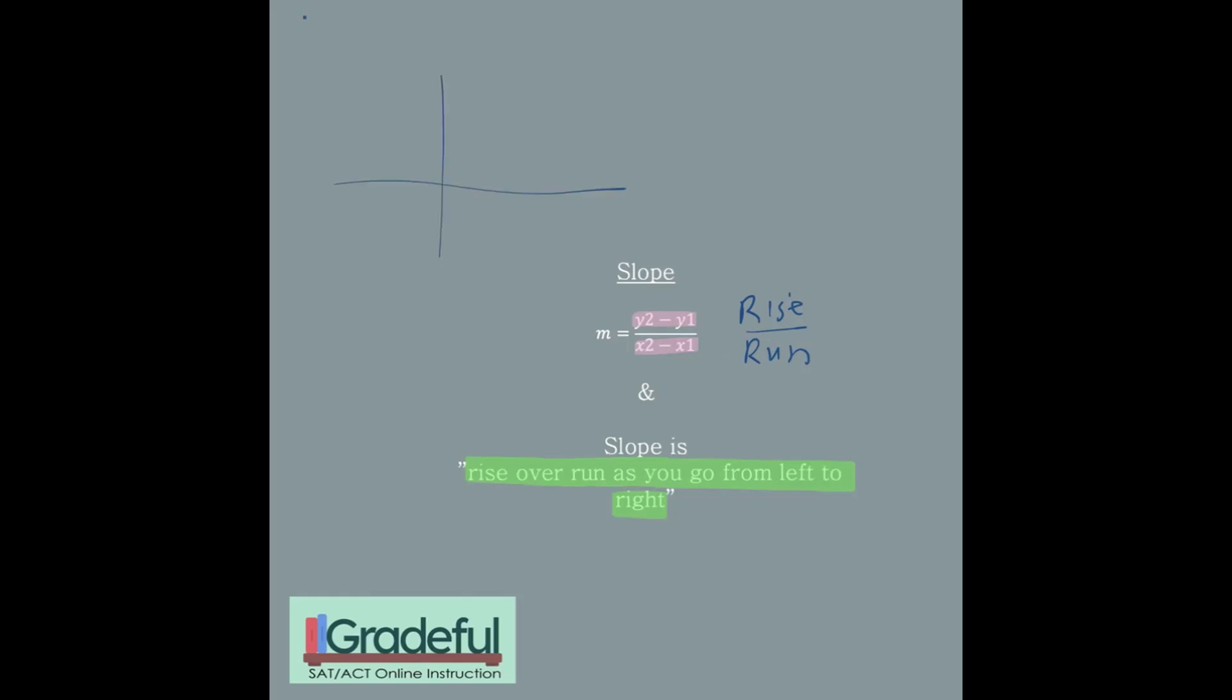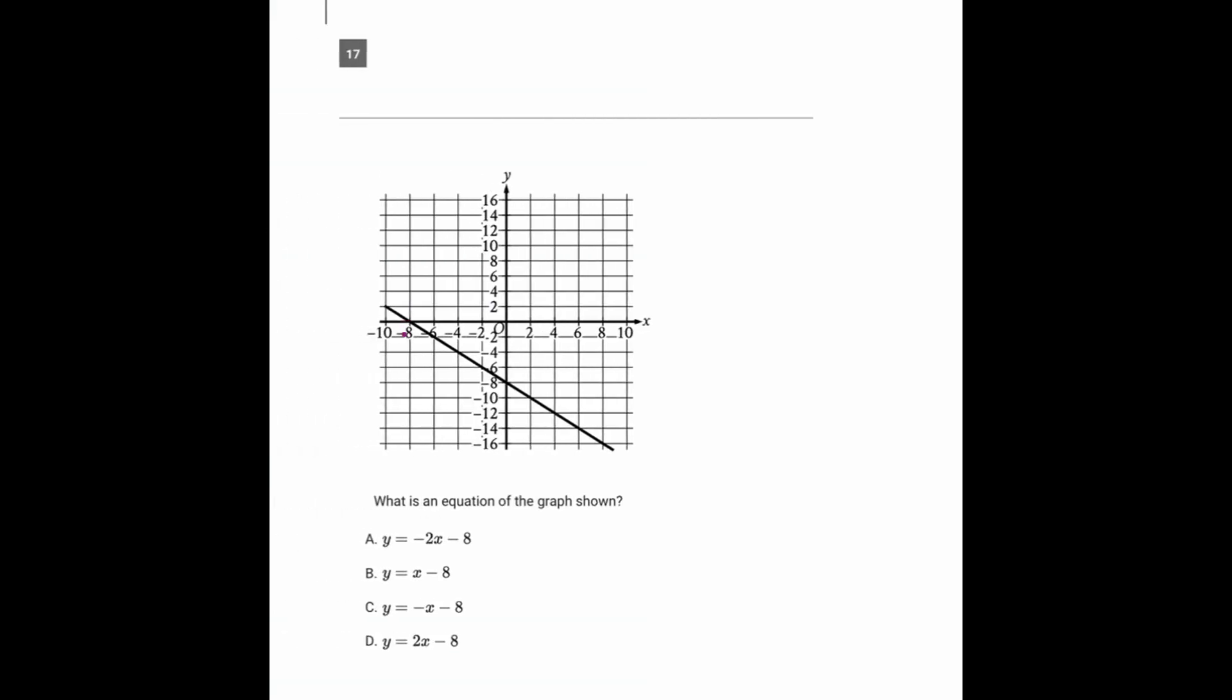But if you do have a graph, you want to remember that to get the slope, you should measure the rise over run as you go from left to right. And that'll help you stay on track as far as whether your slope is positive or negative. Because in this example here, going from left to right, you could see that it was on its way down.